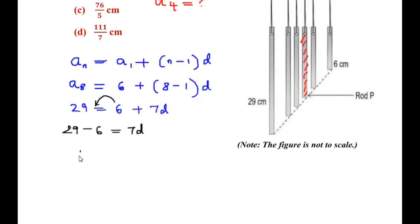So 29 minus 6 is 23 equal to 7D, or we can write D is equal to 23 divided by 7.